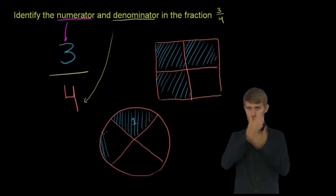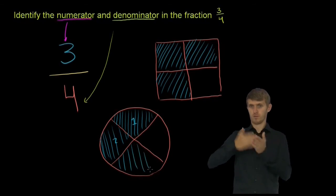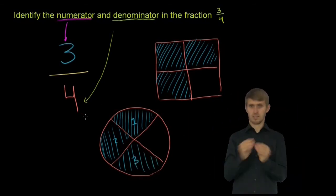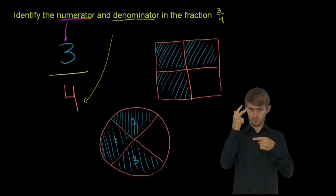So this is 1 piece, this is 2 pieces, and this is 3 pieces. So you can imagine the 4, the denominator represents the total number of pieces in the pie. And then the 3 represents how many of those we ate.